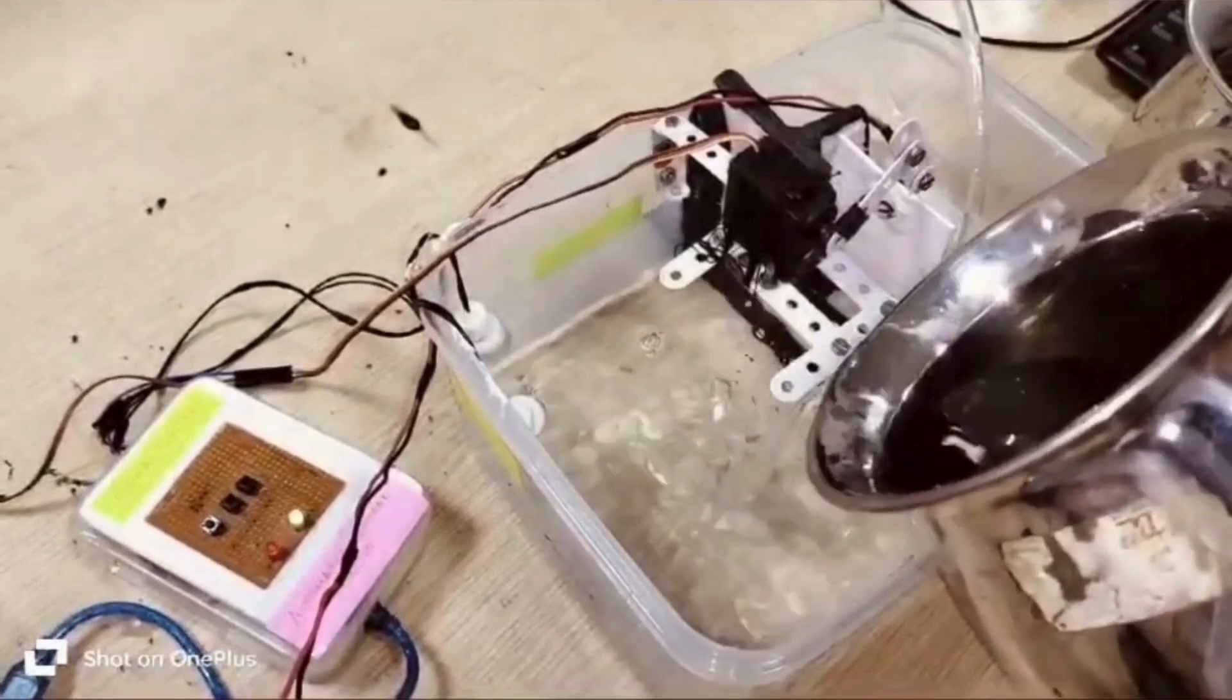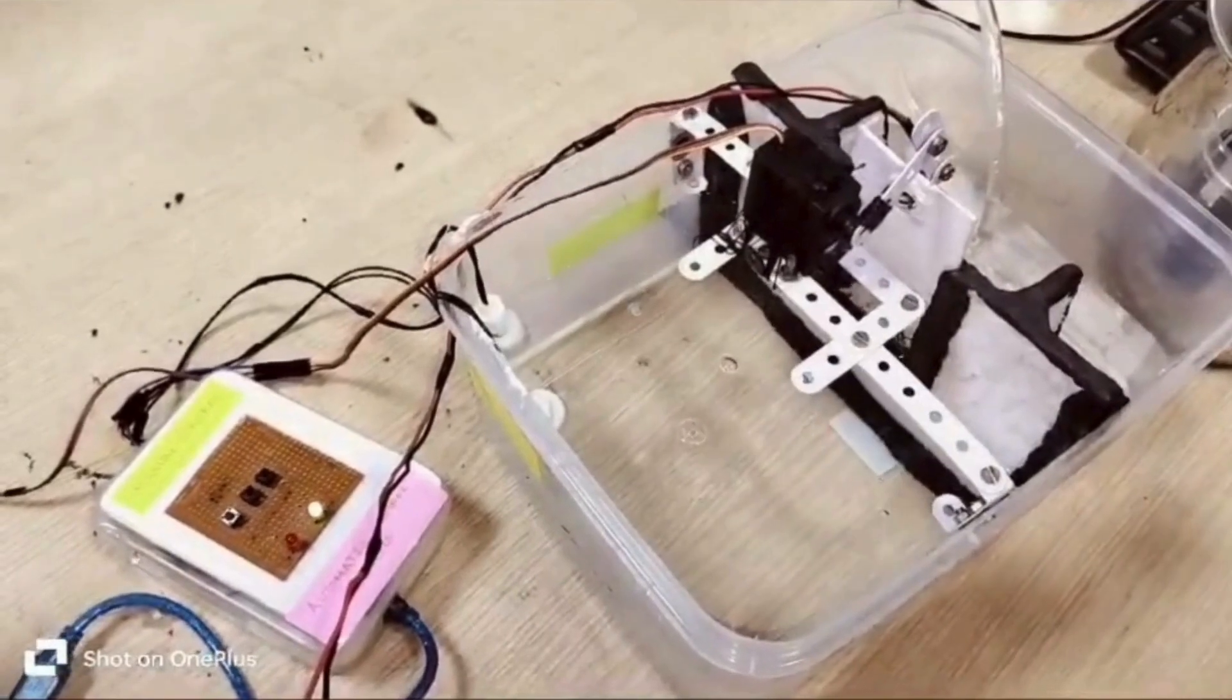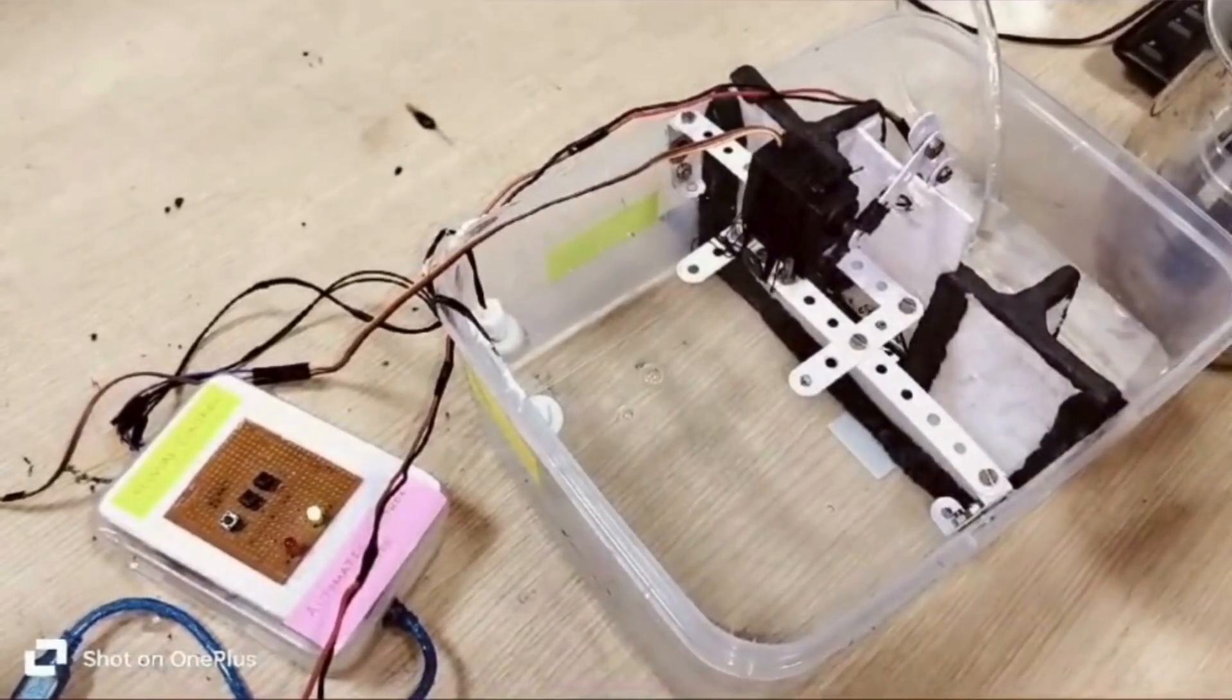As you can see, we have used two float sensors to indicate two different water levels. So when the water level reaches the first float sensor, the motor opens the shutter by half of its length.